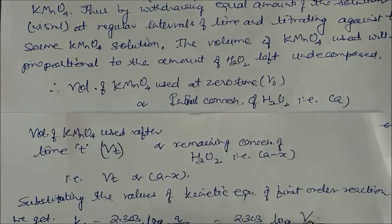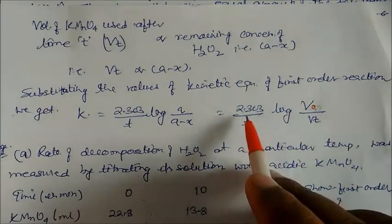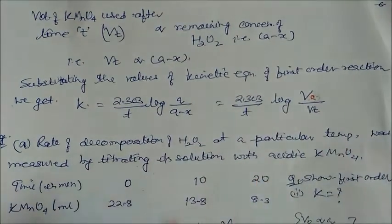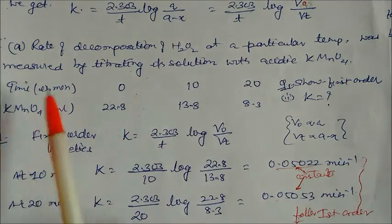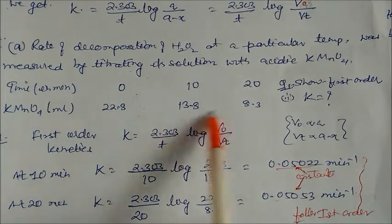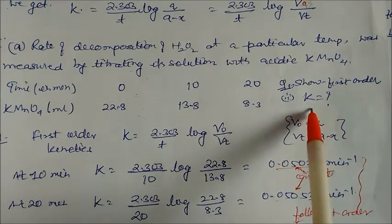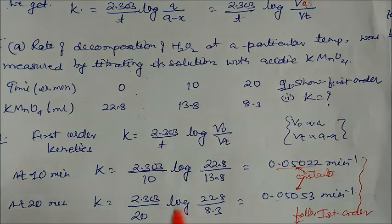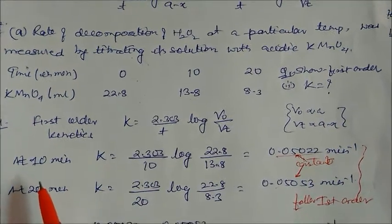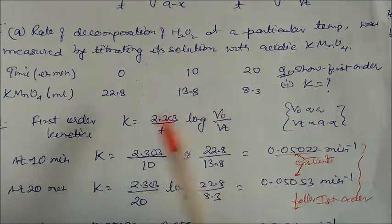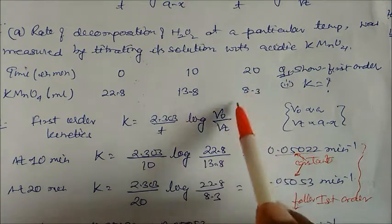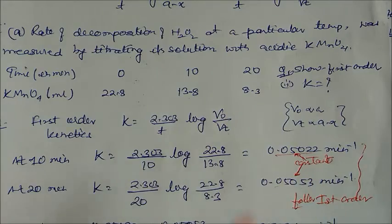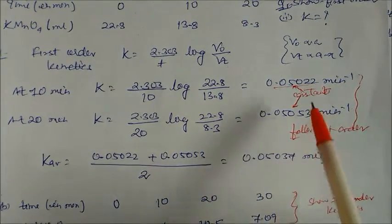Example: rate of decomposition of H₂O₂ measured by titration with KMnO₄. Time is given as 0, 10, and 20 minutes with KMnO₄ volume decreasing from 22.8. Using k = (2.303/t) × log(V₀/Vt): at t = 10 min, Vt = 13.8 mL; at t = 20 min, Vt = 8.3 mL. Solving gives two values near to each other, confirming first order. The average rate constant k = 0.0503 per minute.